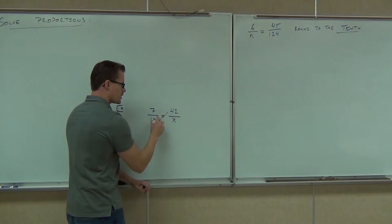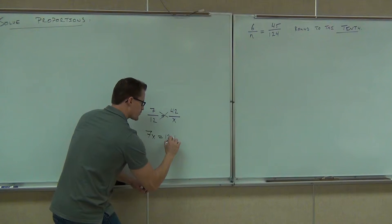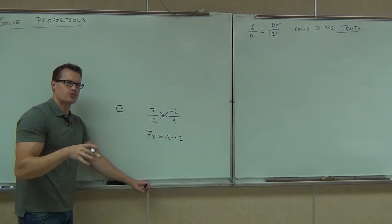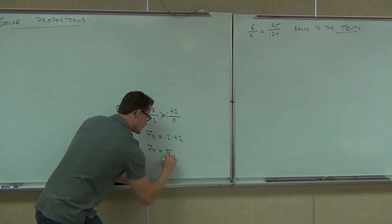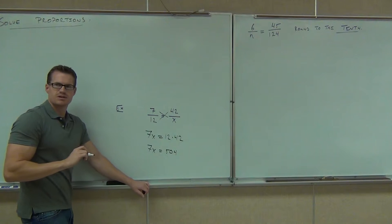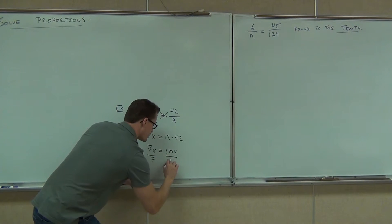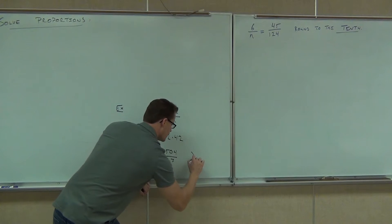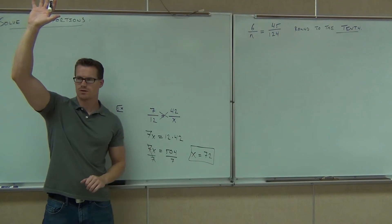If we do our cross product, hopefully on your paper you have 7X equals 12 times 42. You do that 12 times 42 on your calculator, how much are you going to get? 504. How are we going to solve 7X equals 504 then? Divide by 7. Sure. How much is 504? Exactly? Yes. Raise your hand if you've got 72. Good for you. That's fantastic.